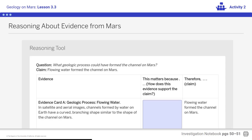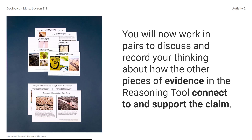Now you will practice using the reasoning tool with the rest of the evidence cards. Work in pairs to discuss and record your thinking about how the other pieces of evidence connect to and support the claim. Examine the set of Channel on Mars Evidence Cards A–F, 6 cards per set, and the set of Background Information Cards, 2 cards per set, both found in the Materials folder for the lesson. Discuss with a digital partner if you have one; if not, you can work alone.